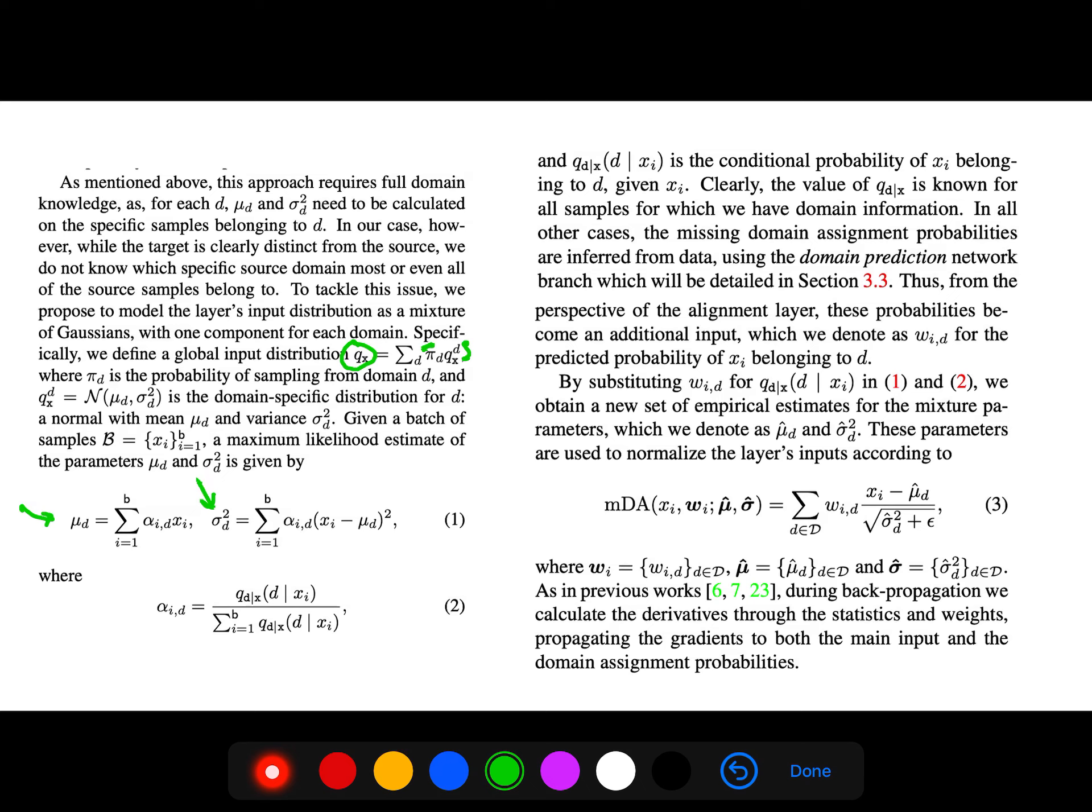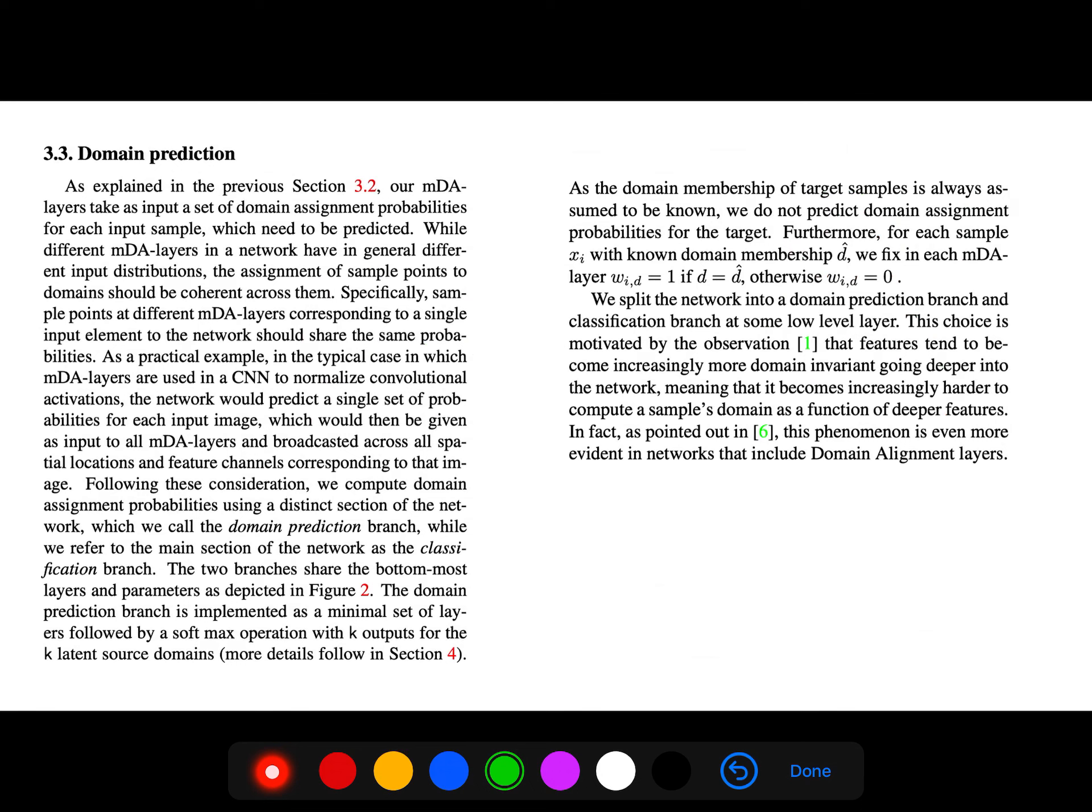So clearly q_d conditional on x is known for all samples for which we have domain information. The missing domain assignment probabilities are inferred from the data using this domain prediction network. But what is that domain prediction network?